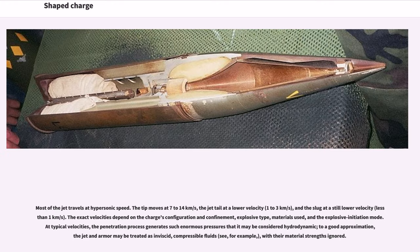Most of the jet travels at hypersonic speed. The tip moves at 7 to 14 kilometers per second, the jet tail at a lower velocity, 1 to 3 kilometers per second, and the slug at a still lower velocity, less than 1 kilometer per second. The exact velocities depend on the charge's configuration and confinement, explosive type, materials used, and the explosive initiation mode. At typical velocities, the penetration process generates such enormous pressures that it may be considered hydrodynamic. To a good approximation, the jet and armor may be treated as inviscid, compressible fluids, with their material strengths ignored.